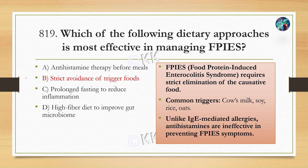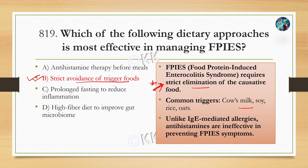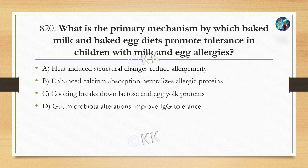The correct option is strict avoidance of trigger foods. For food protein-induced enterocolitis syndrome, we recommend avoiding triggering foods such as cow's milk, soy, and rice. Antihistamine therapy is for IgE-mediated allergy, but FPIES is a non-IgE mediated allergy, so antihistamines would not be effective here.